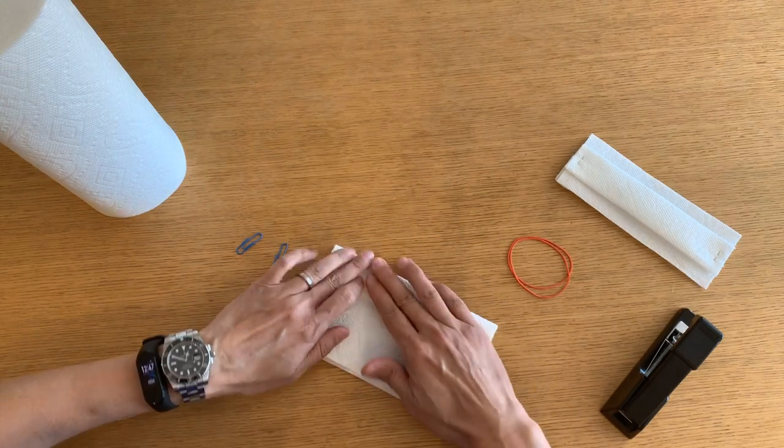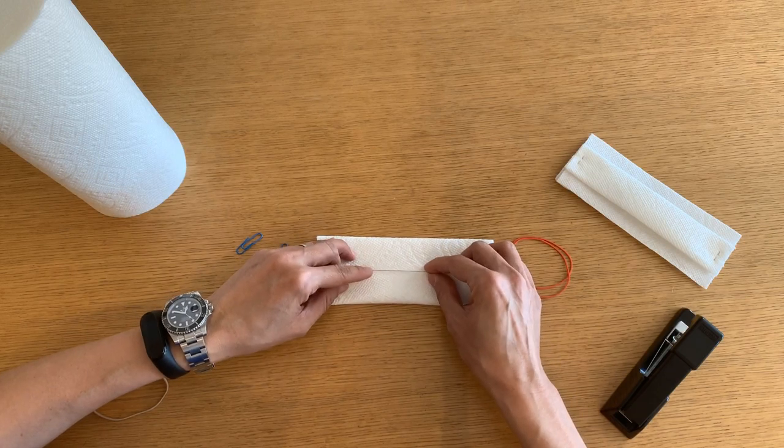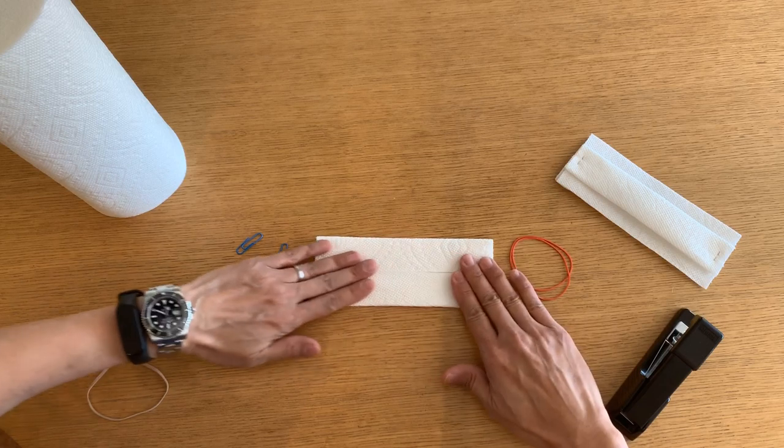I'm going to take the folded edge and then just get it right up to the middle right there. Next, I'm going to make a nice crease right there. Then we're going to take the other half right here and fold that to the middle. So now we're almost done.